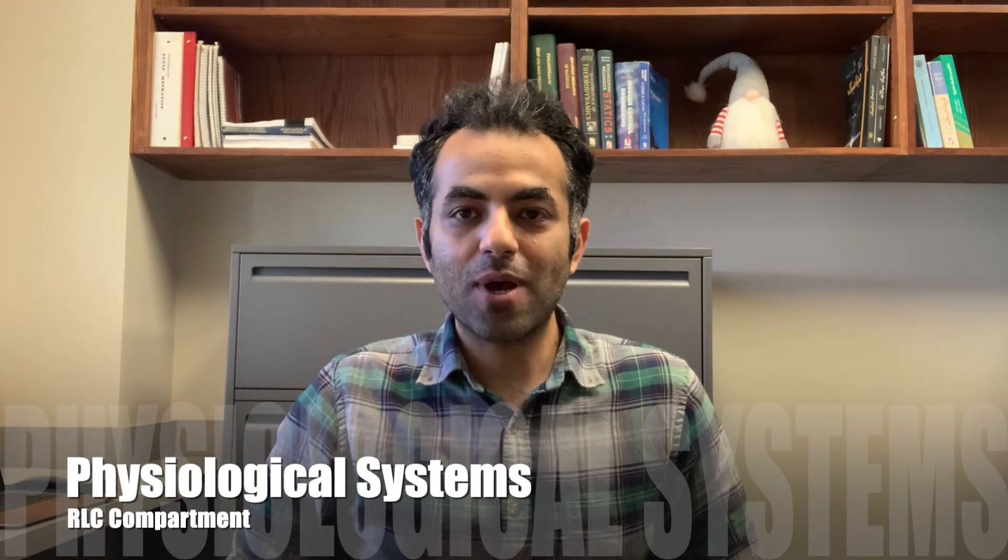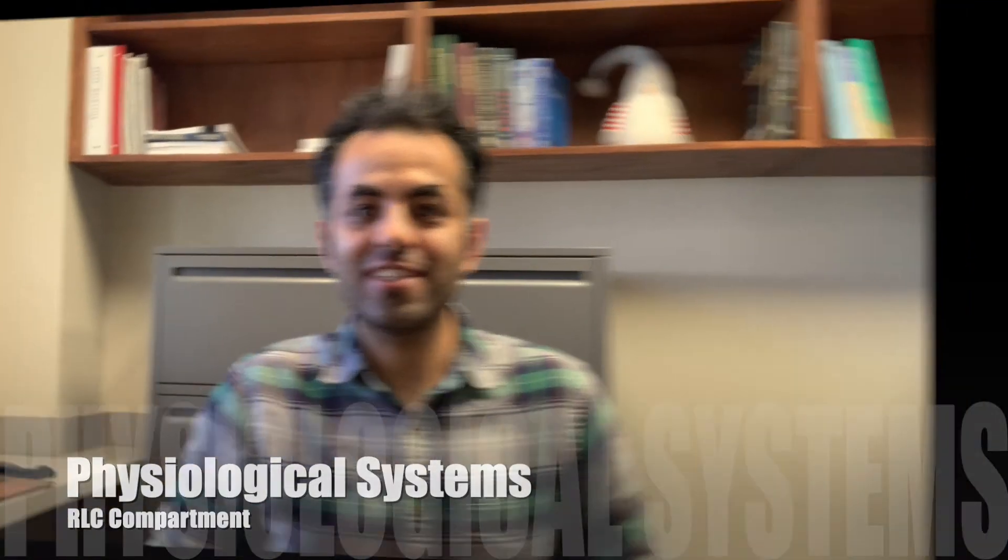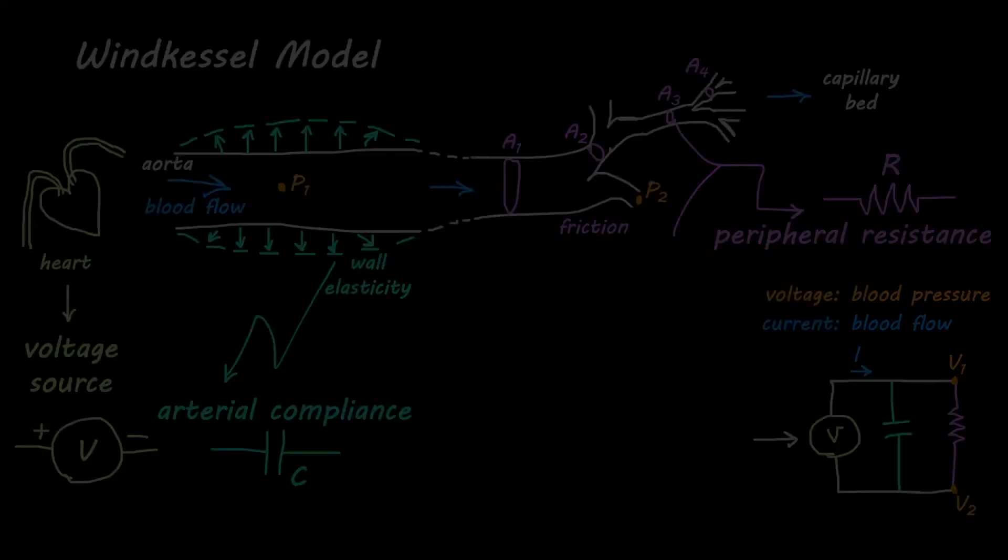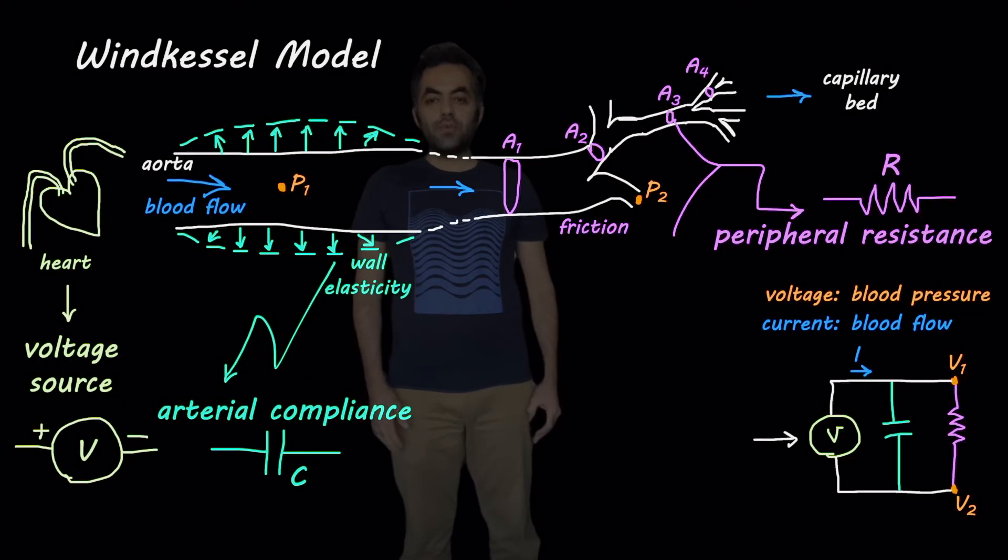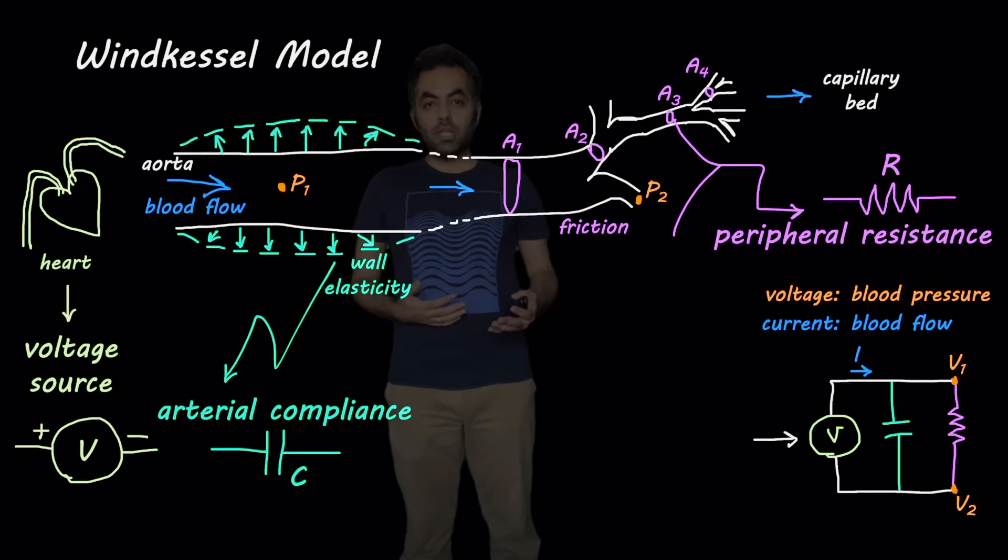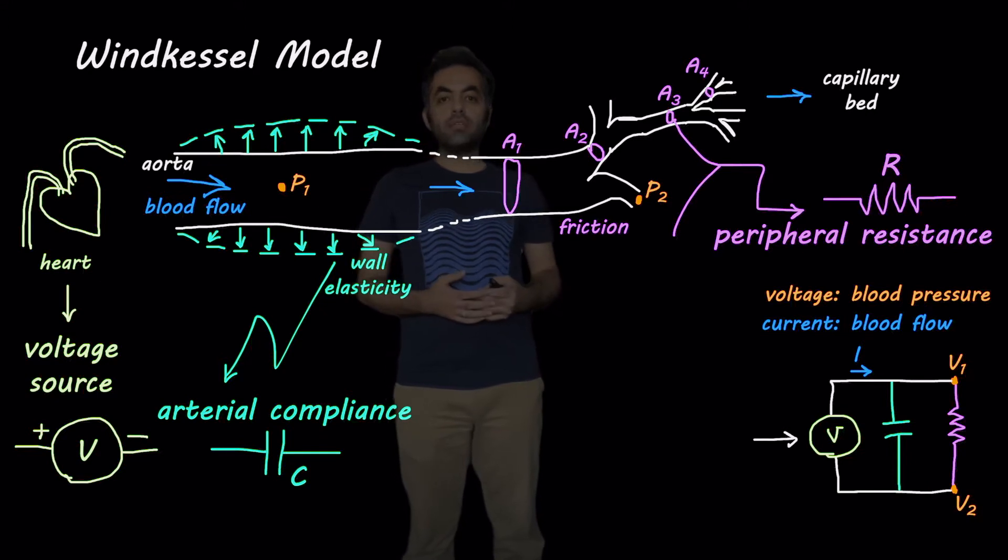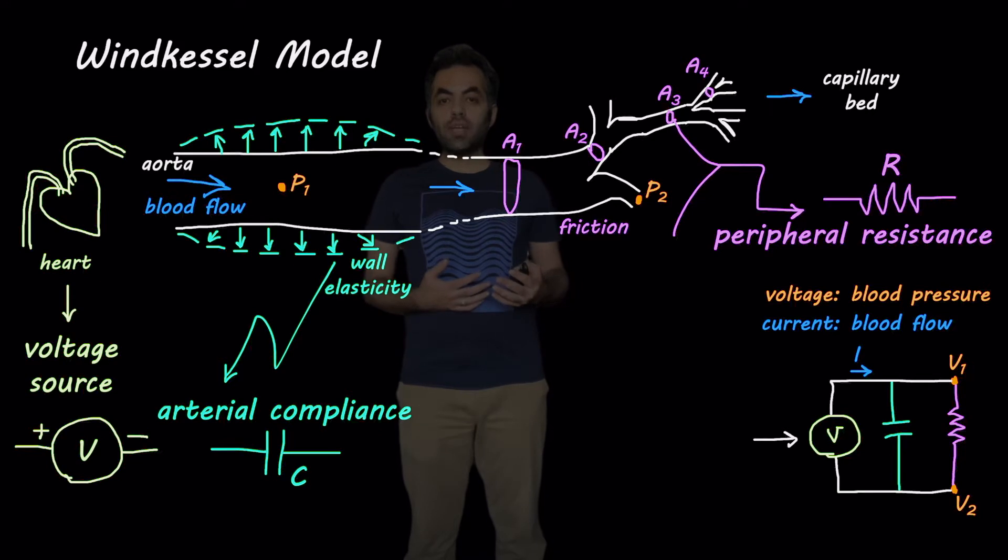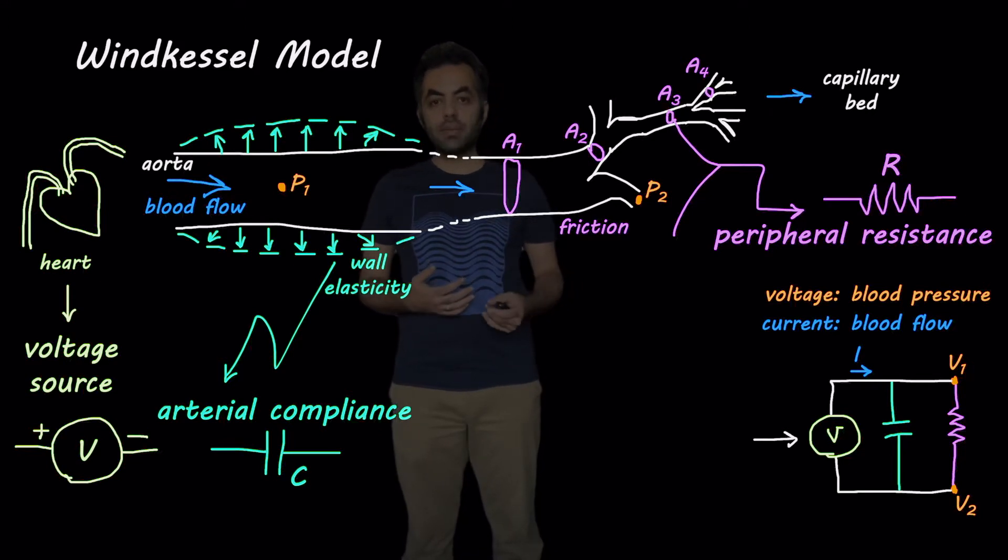And in this series we talk about physiological systems in biomedical engineering. In the last video we talked about the windkessel model and how we can use it in order to describe some of the parameters in our cardiovascular system. So if you haven't watched that video yet, I recommend that you pause this video, go watch that first video and then return here and continue this video.